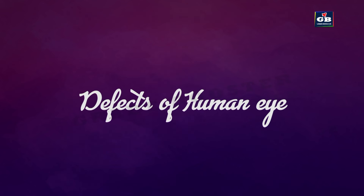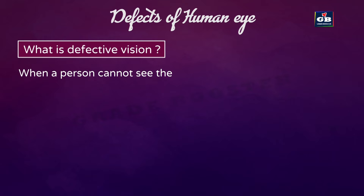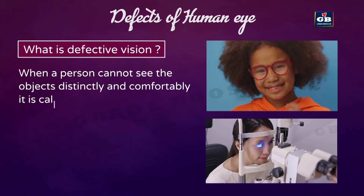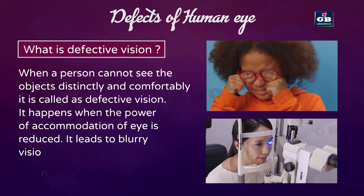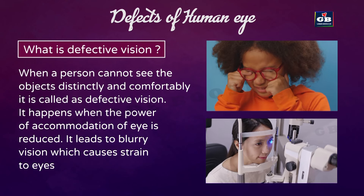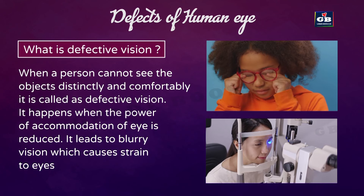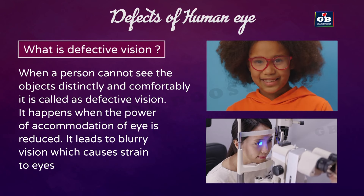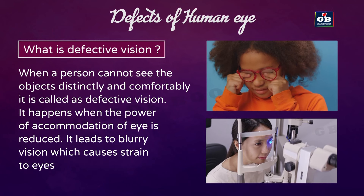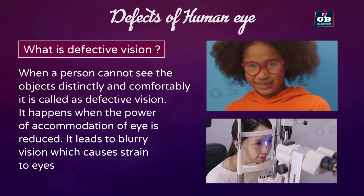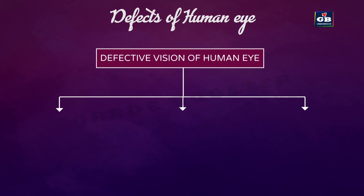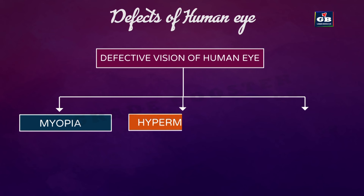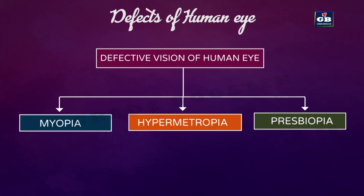Defects of human eye: when a person cannot see objects clearly and comfortably, it is called defective vision. It happens when the power of accommodation of the eye is reduced, leading to blurry vision which causes strain to the eyes. The defective vision of the human eye is mainly of three types: myopia, hypermetropia, and presbyopia.